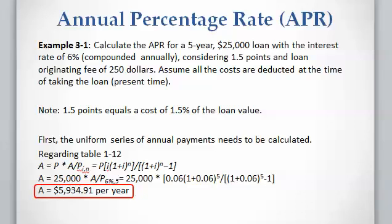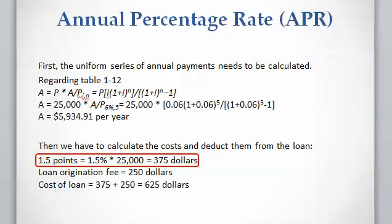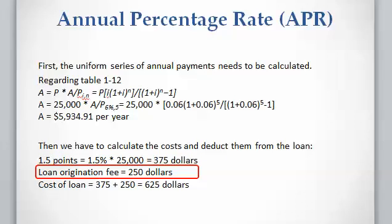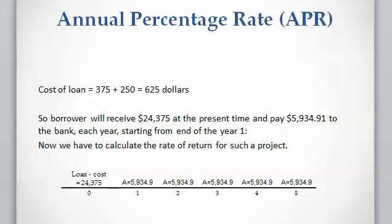In the next step we have to calculate the loan costs. We have 1.5 points, which means the cost is going to be 1.5 percent of the total original loan amount of twenty-five thousand dollars, which comes to three hundred seventy-five dollars. The loan origination fee is two hundred fifty dollars, so the total cost of the loan is three hundred seventy-five plus two hundred fifty, which comes to six hundred twenty-five dollars.